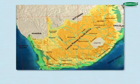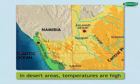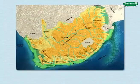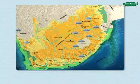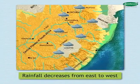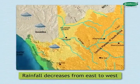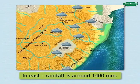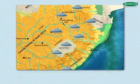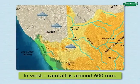However, in desert areas, temperatures are high. This country gets summer rains mainly from October to February. Rainfall decreases from east to west — in the east it is around 1,400 mm, while in the west it reduces to 600 mm.